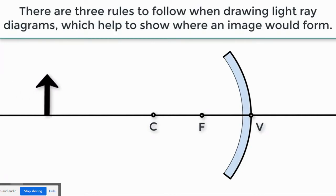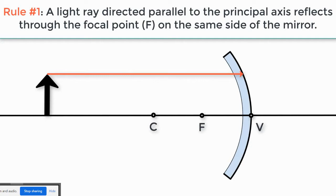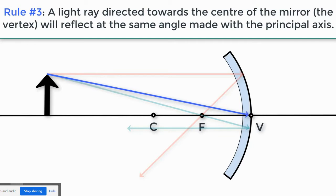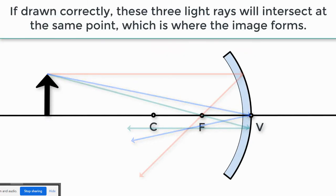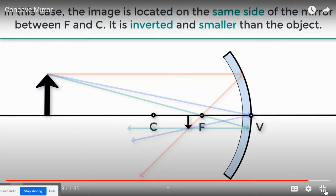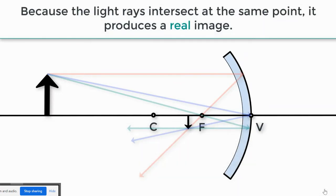There are three rules to follow when drawing light ray diagrams which help show where an image would form. Rule one: a light ray directed parallel to the principal axis reflects through the focal point F on the same side of the mirror. Rule two: a light ray directed through the focal point F will reflect parallel to the principal axis. Rule three: a light ray directed towards the vertex will reflect at the same angle made with the principal axis. If drawn correctly, these three light rays will intersect at the same point, which is where the image forms. In this case the image is located between F and C, is inverted and smaller than the object, and because the light rays intersect at the same point, it produces a real image.